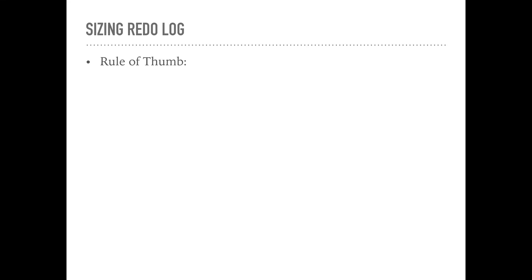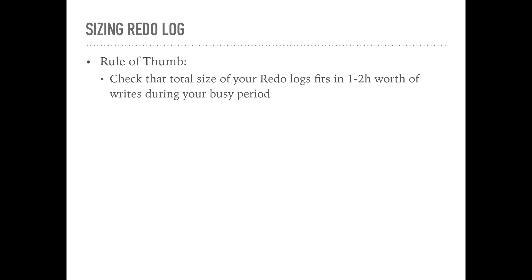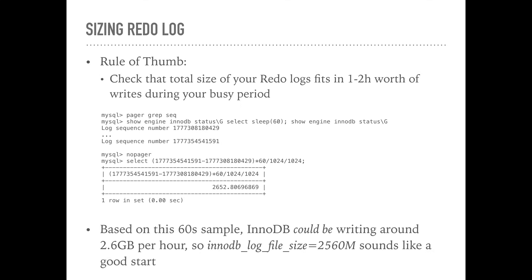Let's talk about how you can figure out the right size for the redo logs. Here's the rule of thumb that works like magic: check that the total size of your redo logs fits one to two hours worth of writes during your busy period. How do you know how much InnoDB is writing? Based on a 60-second sample, InnoDB is writing 2.6 GB per hour. So if InnoDB log files in group was not modified — by default it is 2, the minimum number of redo log files — then by setting InnoDB log file size to, say, 2560 MB, you will have exactly 5 GB of redo log storage across the two redo log files.